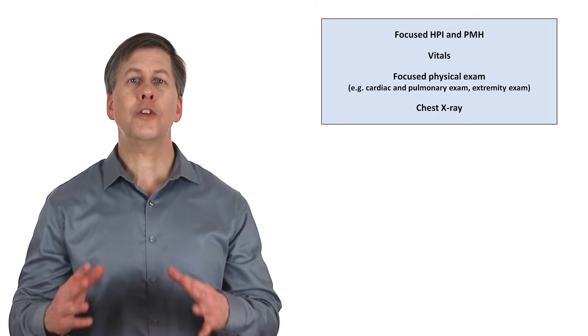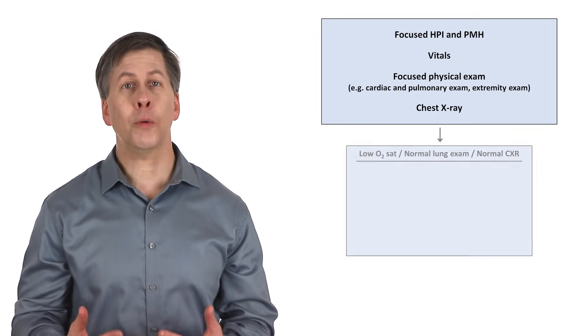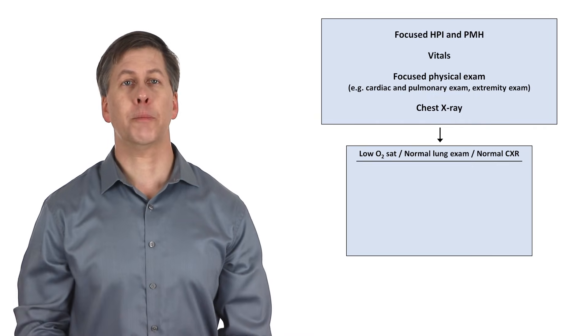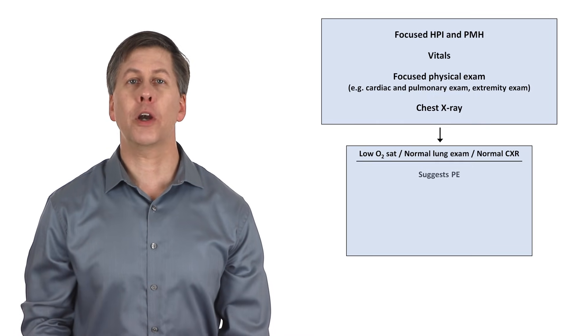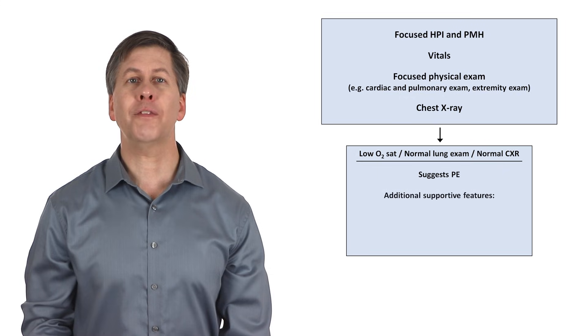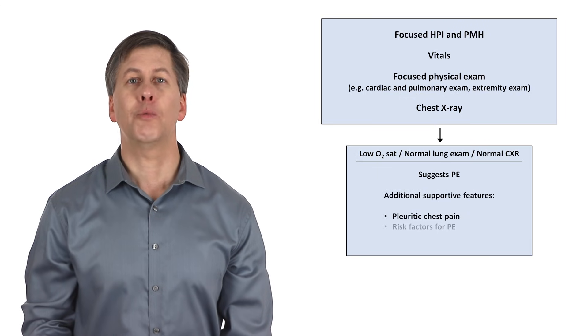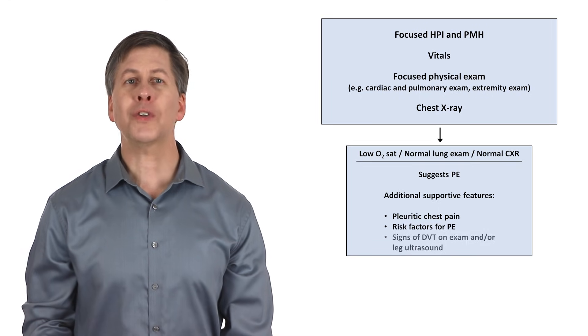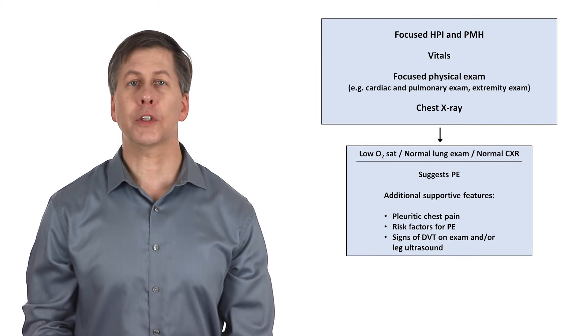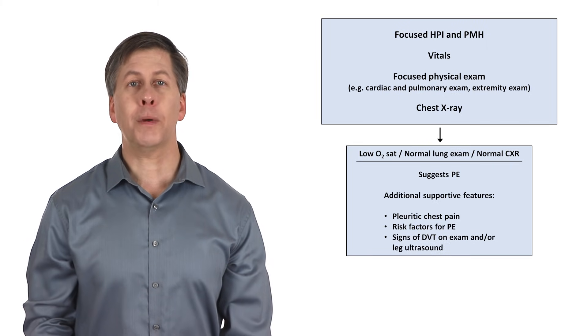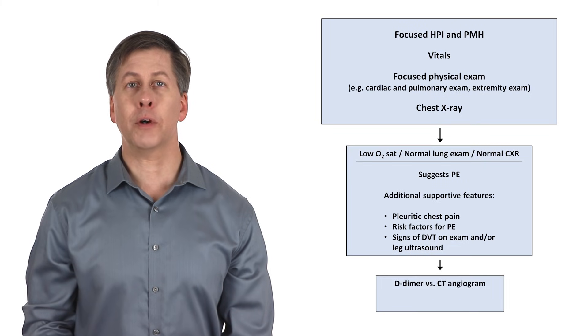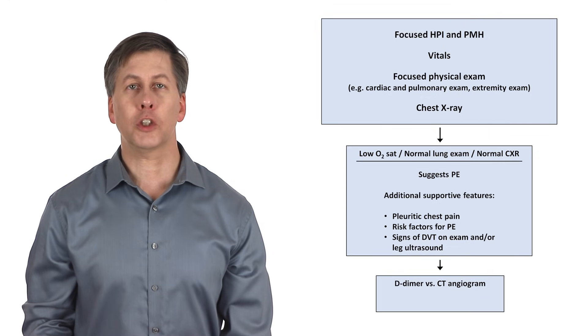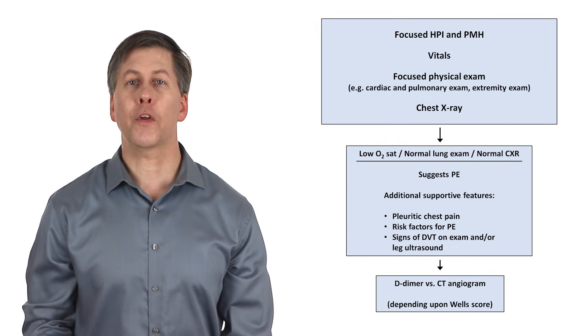Now, what to do if the lung exam and chest x-ray are both normal, but the patient is hypoxemic? The main consideration here is a pulmonary embolism, particularly if the dyspnea is accompanied by pleuritic chest pain, risk factors for PE such as cancer, recent hospitalization, or prior venous thromboembolism, or signs of a deep vein thrombosis on either exam or ultrasound. The possibility of a PE can be further evaluated with either a serum D-dimer or a CT angiogram of the thorax, depending upon the clinical suspicion and a specific clinical prediction rule called the WELL score.